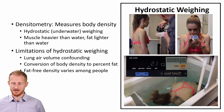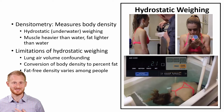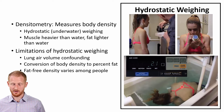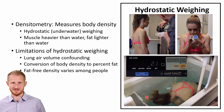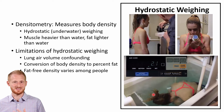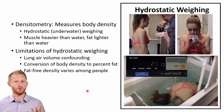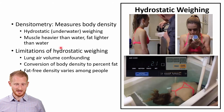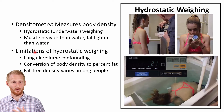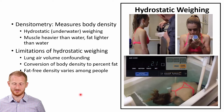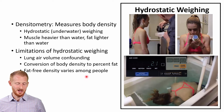For underwater or hydrostatic weighing, you weigh the person on dry land, assess the volume of air in their lungs, then weigh them underwater. From the difference in weight on dry land versus underwater, you calculate body density — it's essentially a displacement measurement, because you're displacing water, and how much water you displace determines your buoyancy. The basic concept: muscle is heavier than water, fat is lighter than water, so more body fat means you float more and appear lighter underwater.